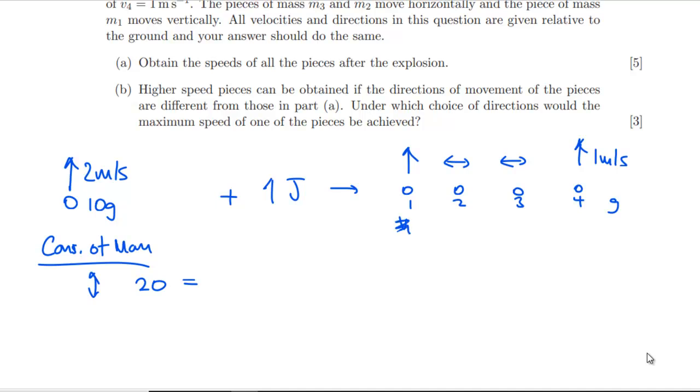Let's do the vertical conservation of momentum first. So we've got 2 times 10. I'll just keep everything with grams. It's got to be equal to, this is v₁. Let's just write them up here with the arrows: v₁, v₂, v₃.